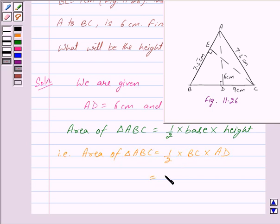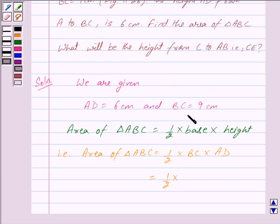This equals 1/2 × 9 × 6, where BC = 9 cm and AD = 6 cm.